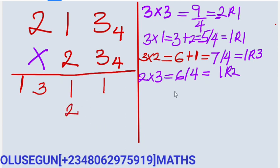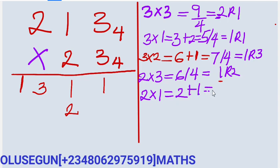You carry the 1. So 2 times 1 gives us 2. You add this carry 1 to it, giving us 3. So you are going to write the 3 here. The 3 is less than 4, so there is nothing else to do about it.